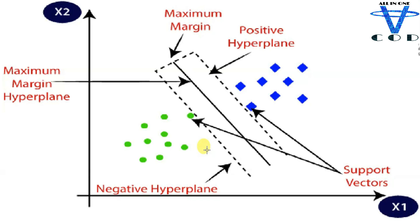Now why do we need support vector machine? You can see we have three lines: the first support vector through the nearest green data point, the second support vector through the nearest blue data point, and the middle main line — officially called the hyperplane. The side toward the green data is the negative hyperplane (d minus) and the side toward the blue data is the positive hyperplane (d plus). We want to find the margin, which equals d minus plus d plus.